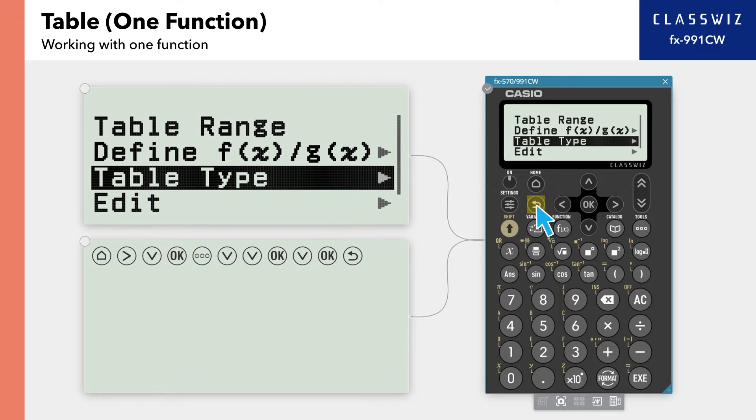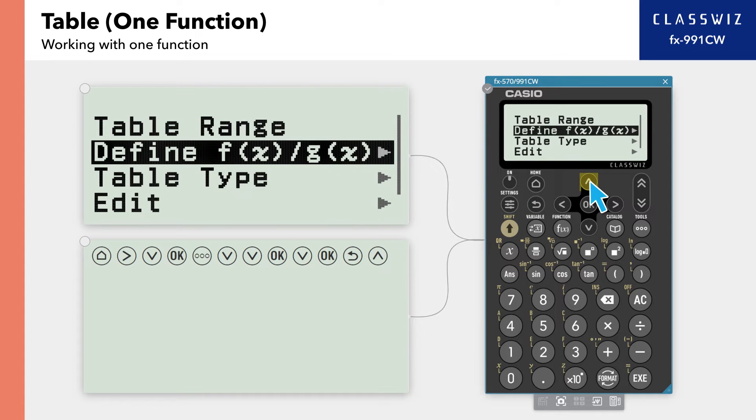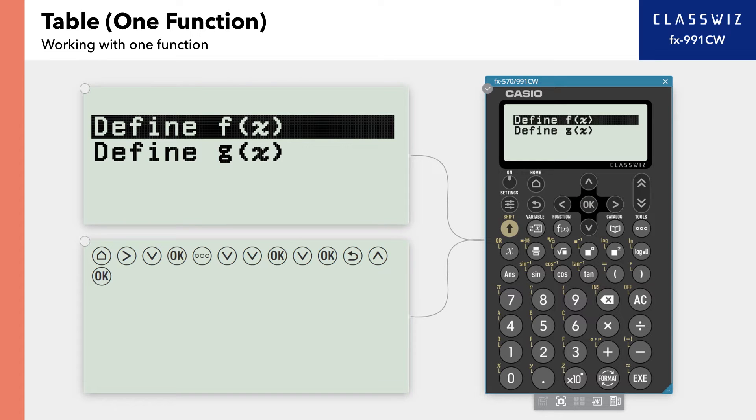Press Back to select Define Fx and Gx. Here, select Define Fx.